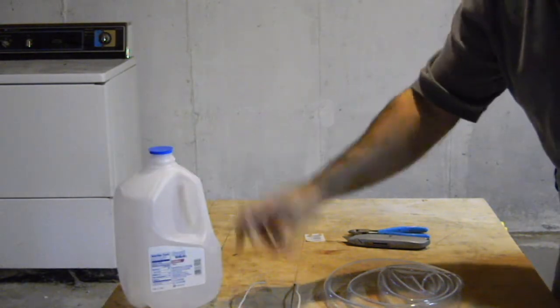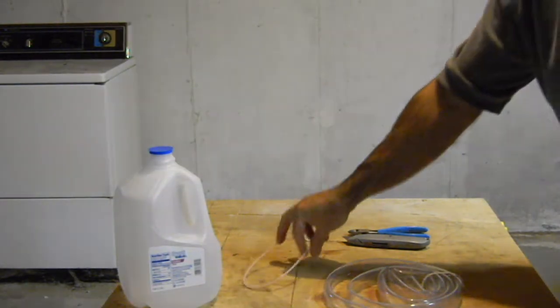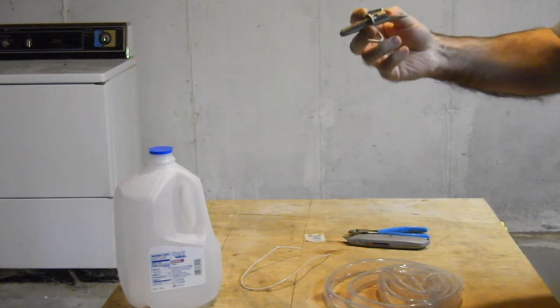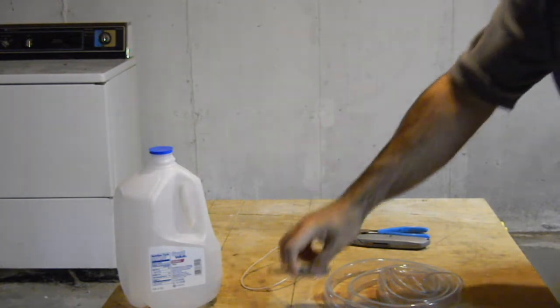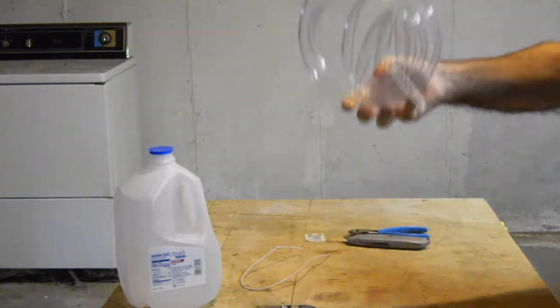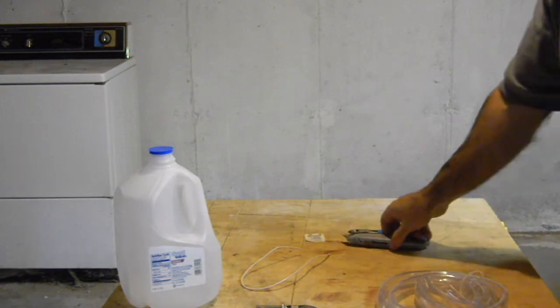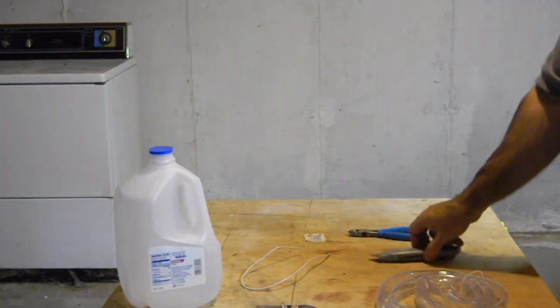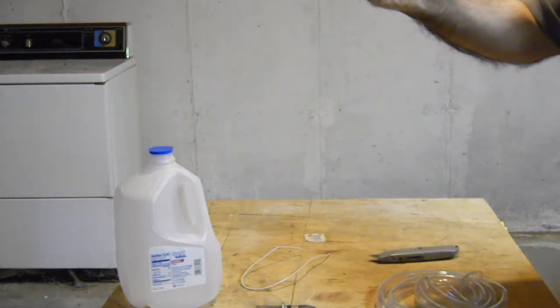An empty water jug, piece of wire, a spile which is used to tap into the tree, some plastic tubing, a knife, and a pair of wire cutters.